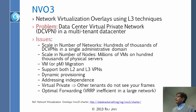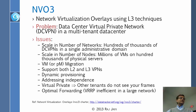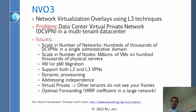The key issues NVO3 is solving include: scale in the number of networks — hundreds of thousands of DC VPNs (virtual private networks), which we call overlays. Overlay is what the tenant gets; underlay is the physical network the provider has. They also address scale in the number of nodes — millions of VMs or hundreds of thousands of physical servers — and VM or PM migration, the ability to move things around.